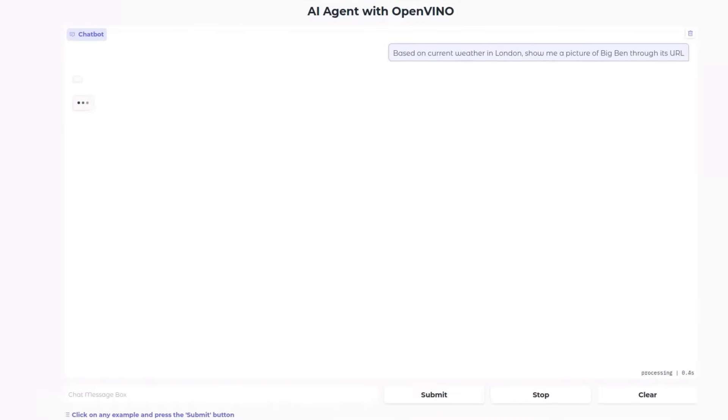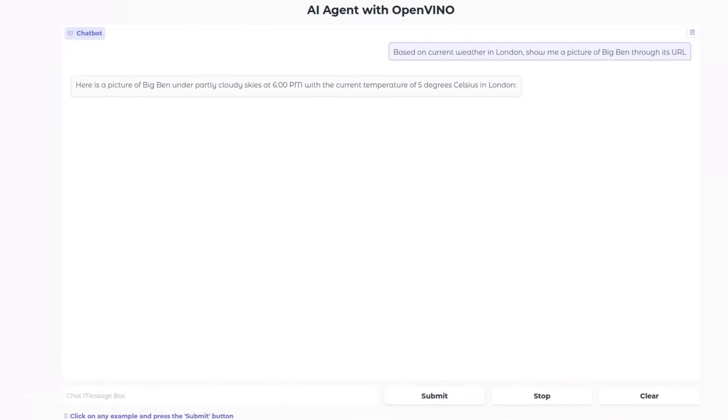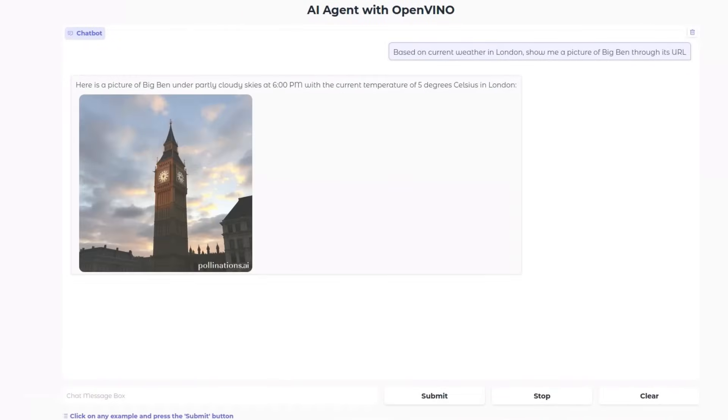So, the engine has to retrieve the current weather in London and then generate an image. And here it is. The Big Ben. Cloudy skies. London. What else?